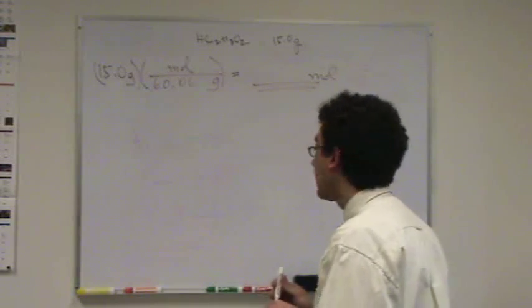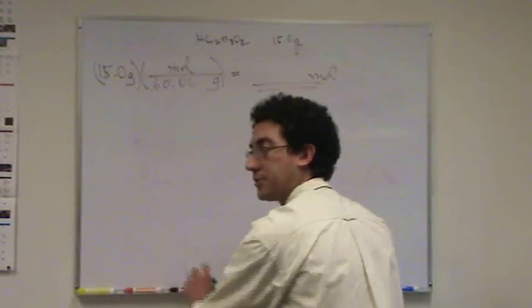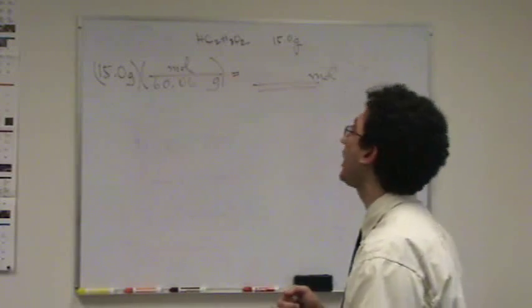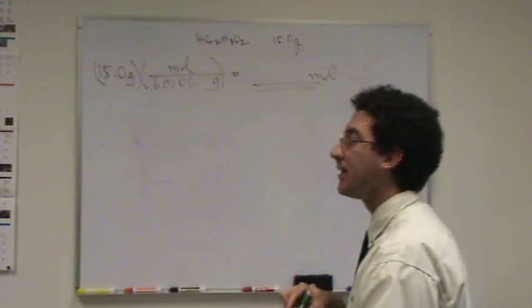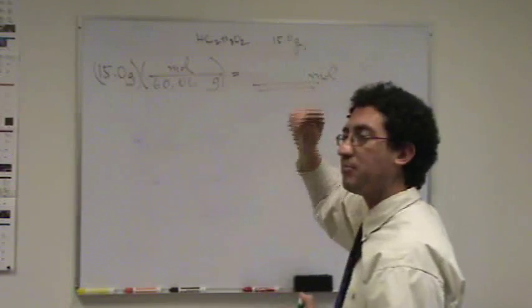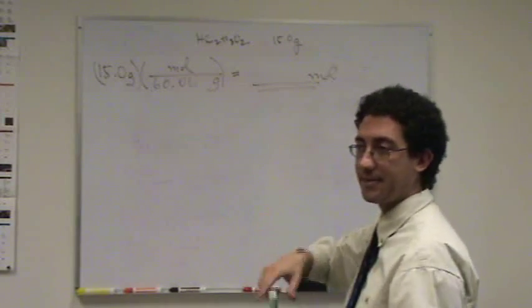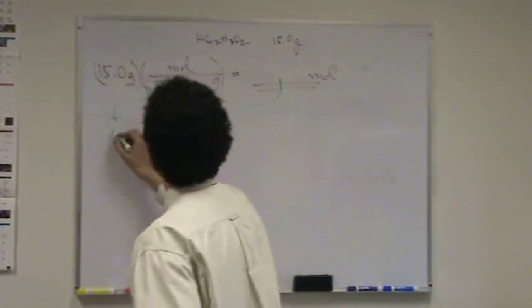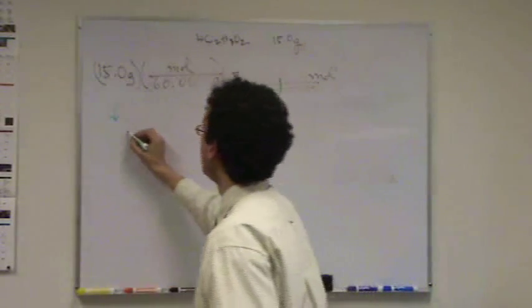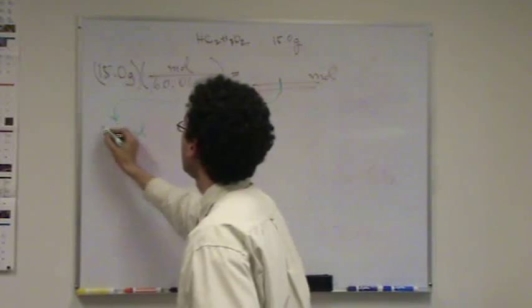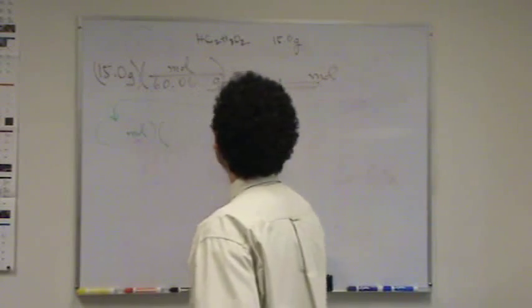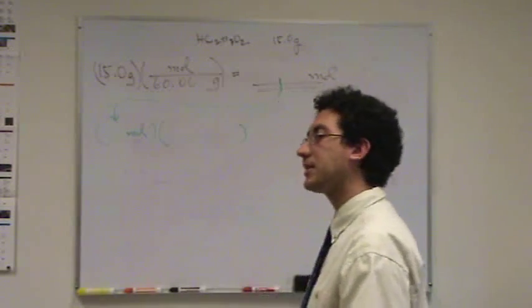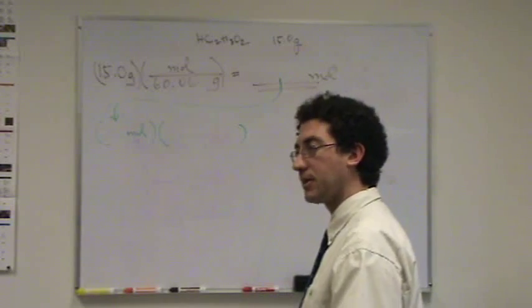Now, let's say we continue this, and I don't just want moles. I want atoms, or not atoms, molecules of acetic acid. I want to know if you give me 15 grams, how many molecules of acetic acid are in there? So we'll take this number, whatever it is moles, and then what I'm going to do, anytime I want to get to something small like atoms or molecules, you've got to use Avogadro's.